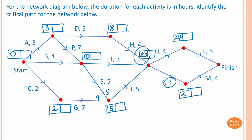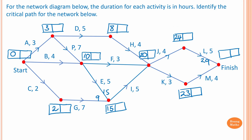To complete this project we need to complete activities L and M. Twenty-four plus five is twenty-nine, and twenty-three plus four is twenty-seven. Therefore the earliest time to finish is twenty-nine hours. Now we need to do backward scanning.